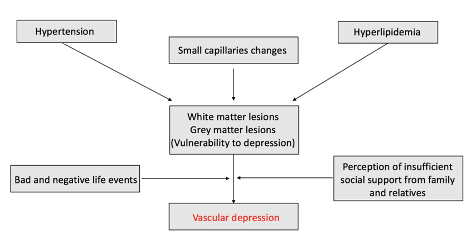Alternatively, clinically defined criteria as proposed initially by Alexopoulos and colleagues includes dimensions of depressive symptoms, disability, and cognitive impairment. Specifically, the syndrome has been characterized by a loss of interest in activities, psychomotor retardation, paranoia, and cognitive impairment in the domains of language fluency and visual naming. Eisenstein and colleagues proposed diagnostic criteria for vascular depression that incorporates elements of both clinical and MRI definitions.